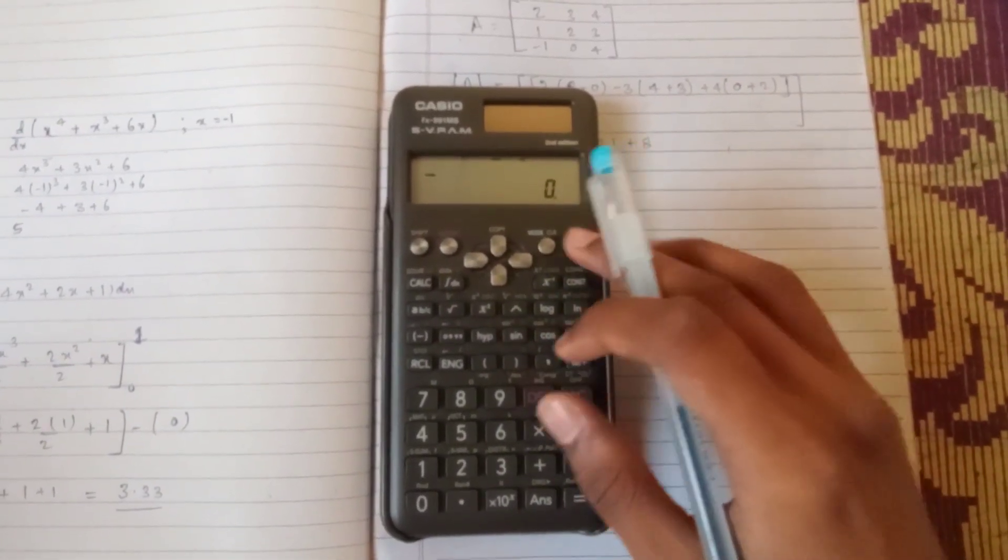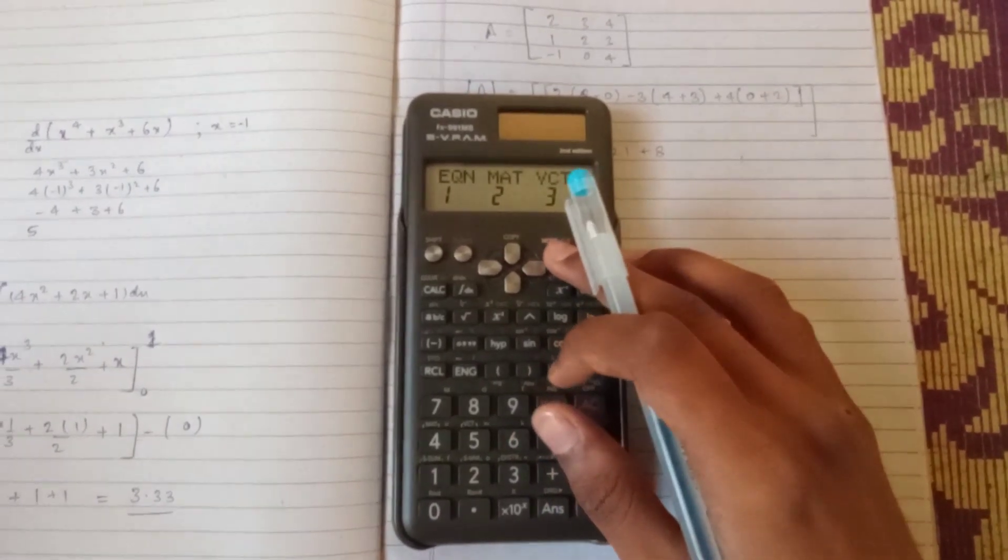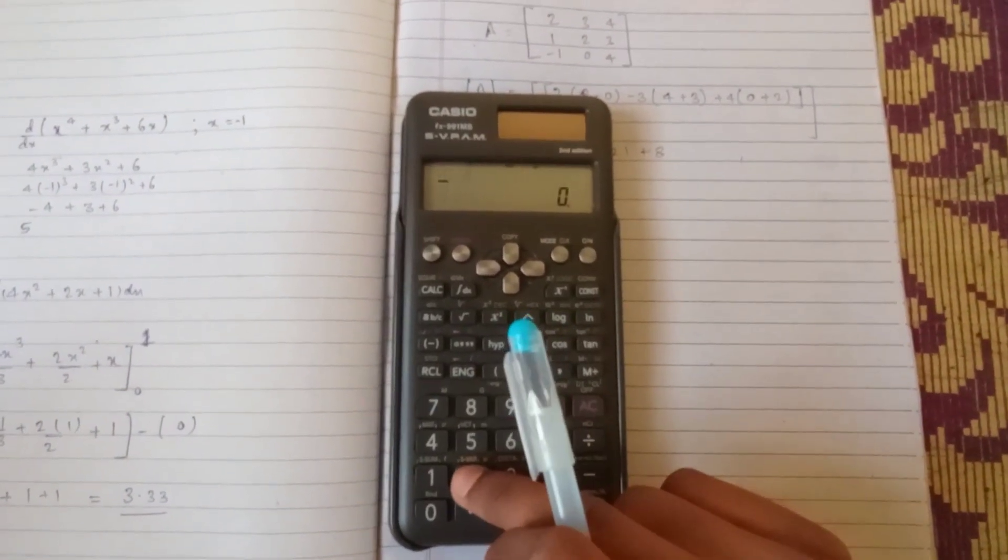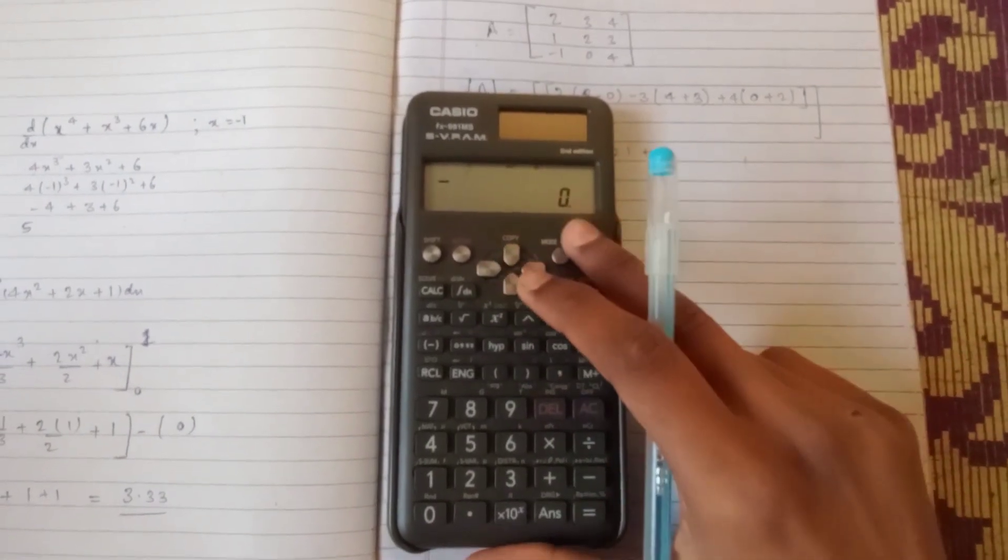On the calculator, set it in the matrix mode. Here is the MAT option 2. It's now in matrix mode.